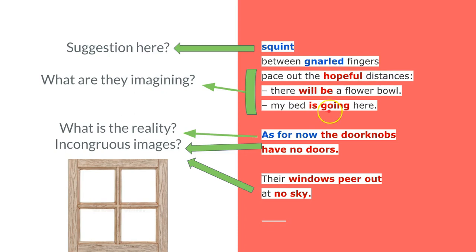You've got the sense of hope with 'will be,' 'is going'—these are certainties in the mind of the speaker. They're really imagining what their house is going to look like, but it's the future tense. It hasn't happened yet.